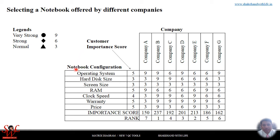Here is the notebook configuration listed in rows: Operating system, hard disk size, screen size, RAM, clock speed, warranty, and price. At the same time, we mention the customer importance score — how important each notebook configuration is to the customer. We put the rank for all notebook configurations: Operating system is 5, hard disk size is 3, screen size is 3, RAM is 5, clock speed is 4. This tells us how important each feature is to the customer.